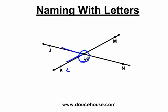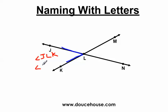In this case, if I wanted to name this angle from J to L to K, I need to use the three letters — the three points — that help create that angle. So this angle could be called angle JLK, going from J to L to K. Or I could have called it angle KLJ, going from K to L to J. I could not call it just angle L because, again, it's too confusing.